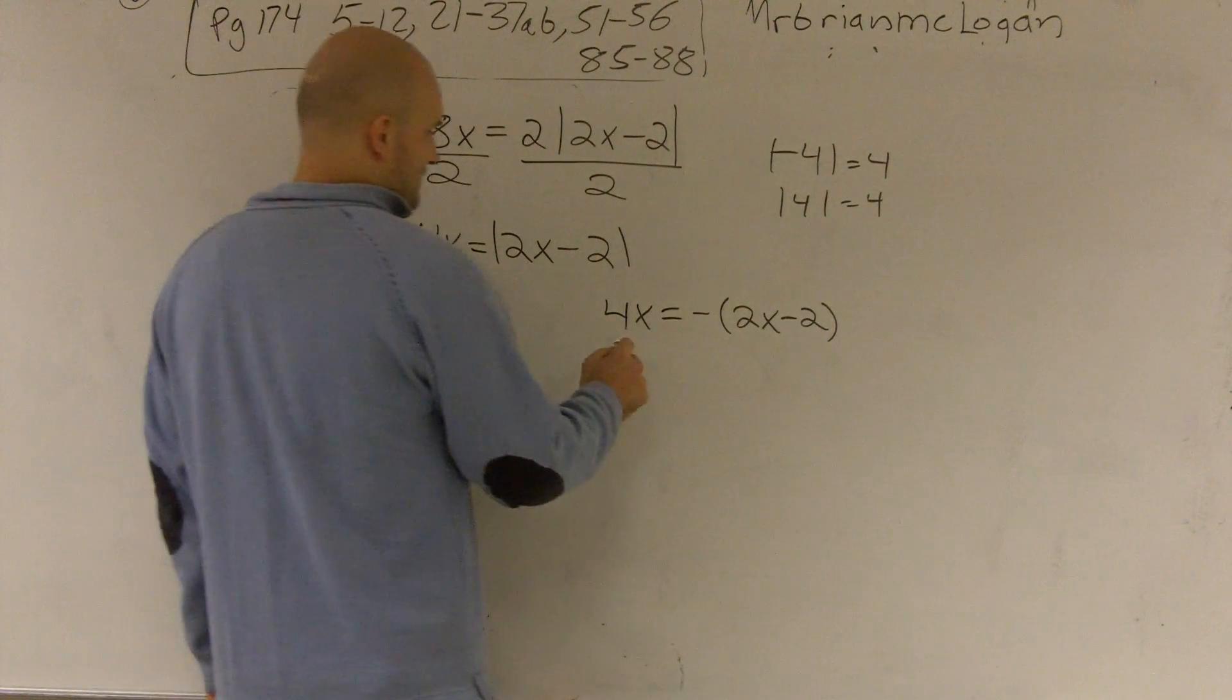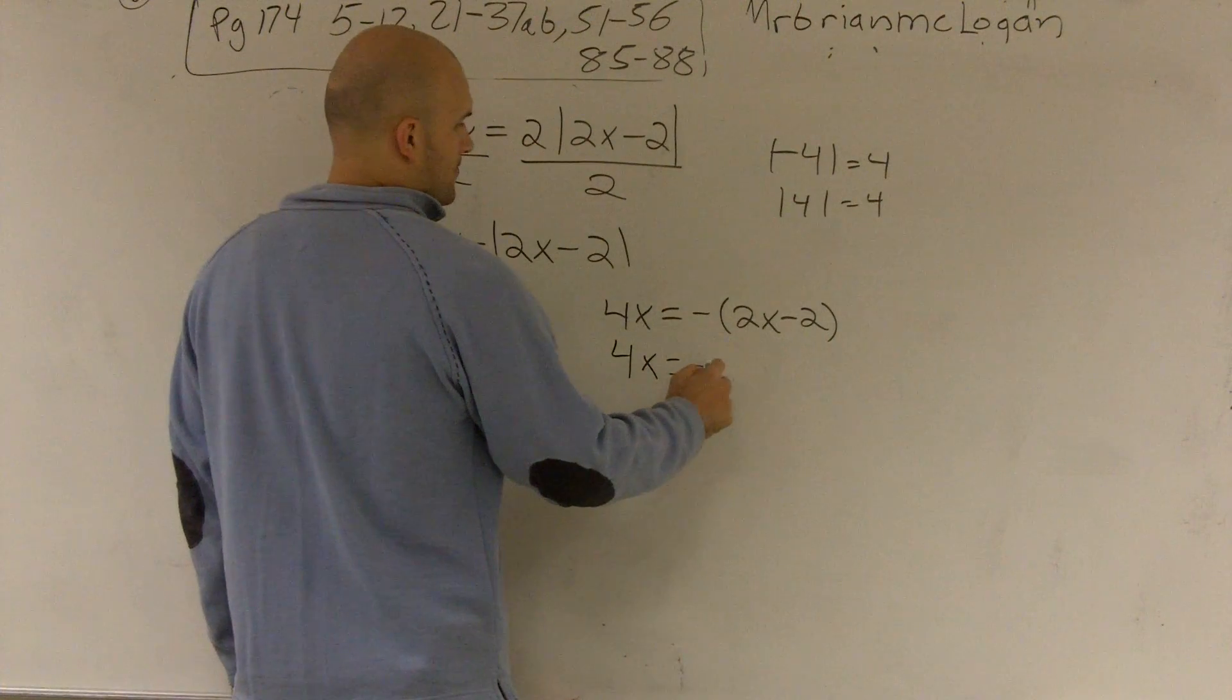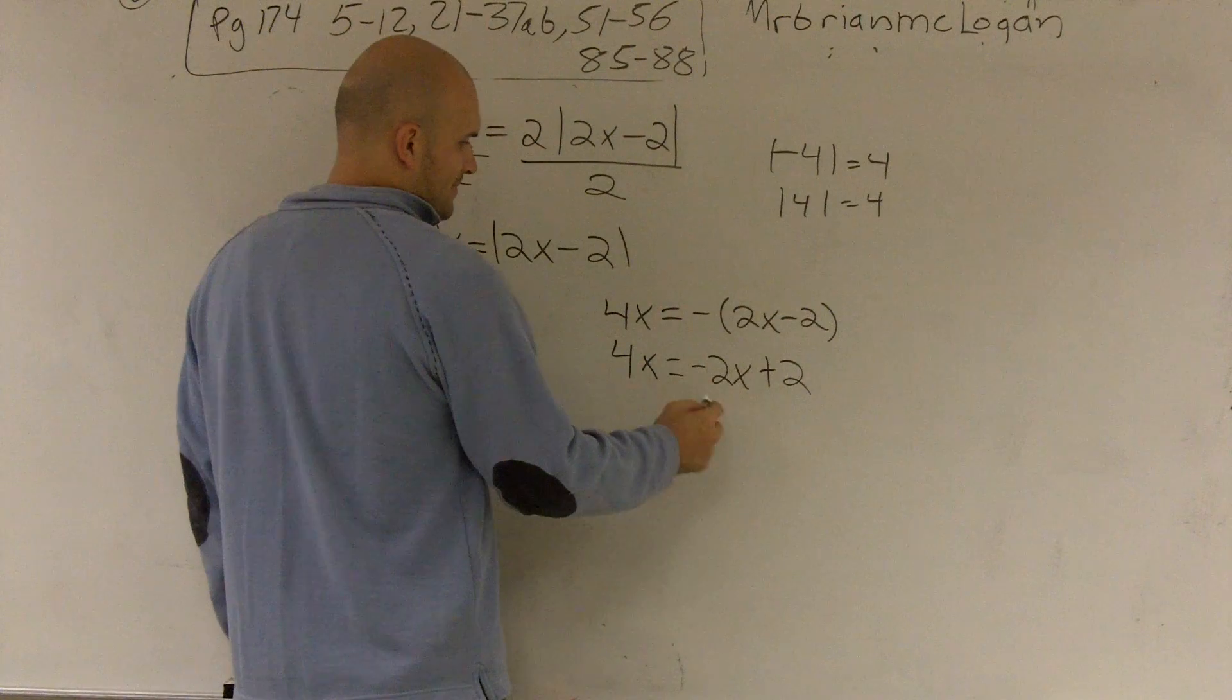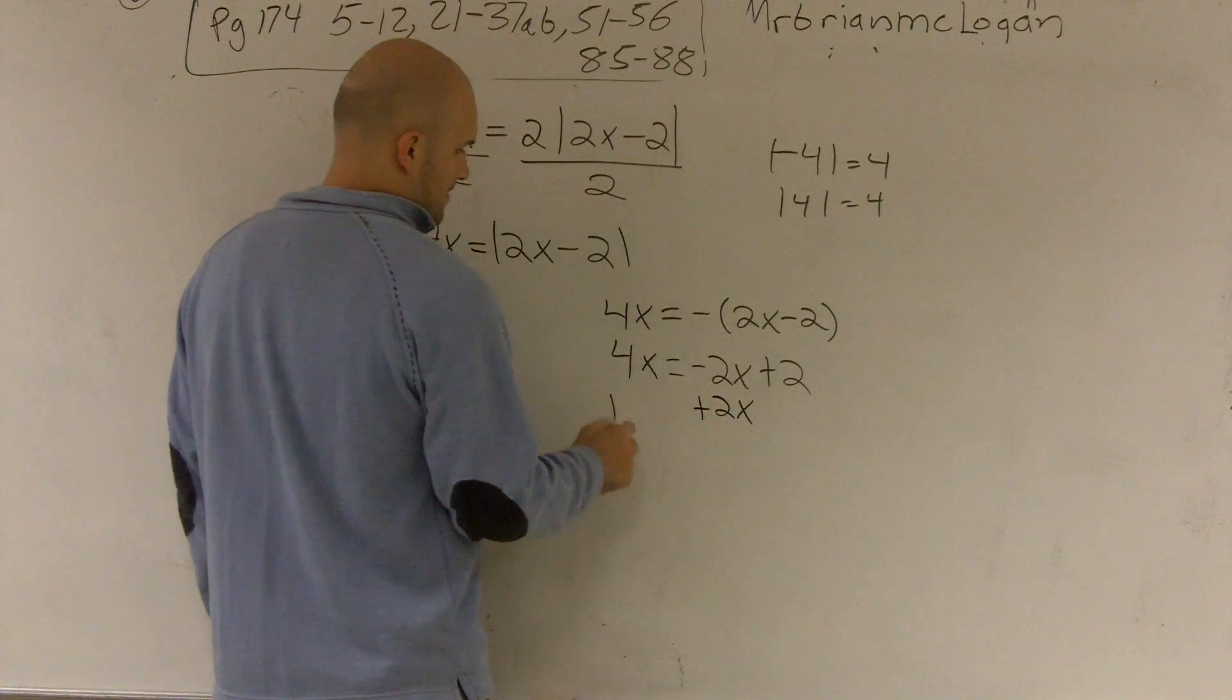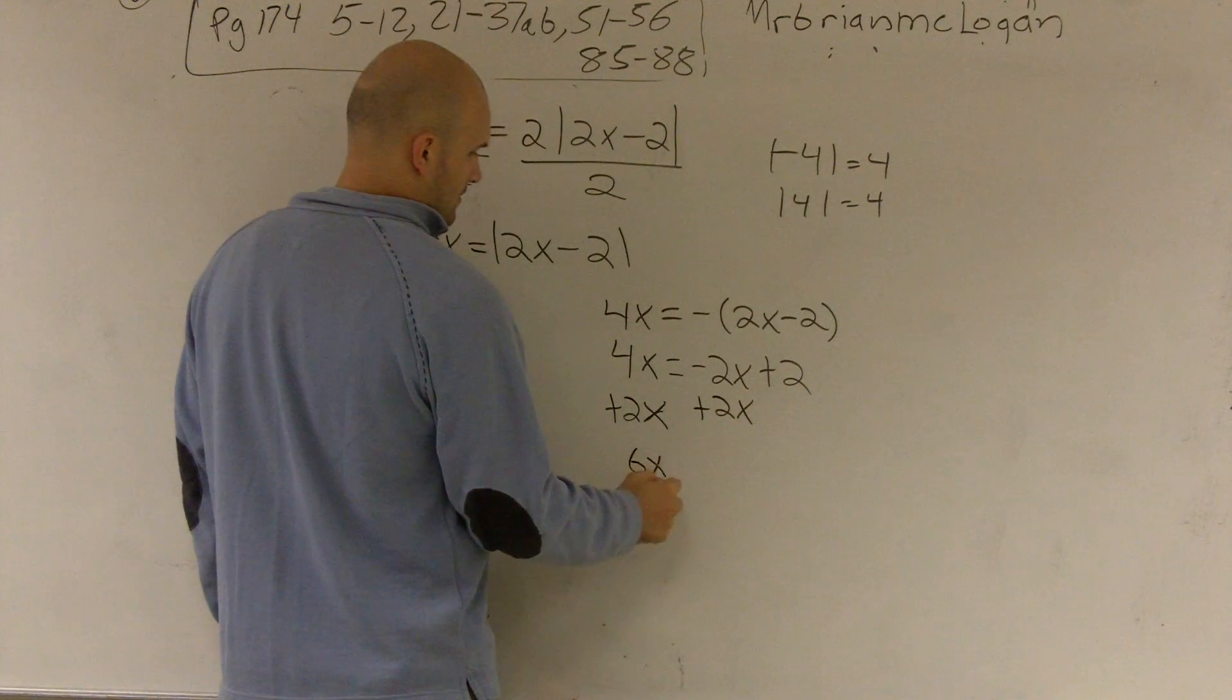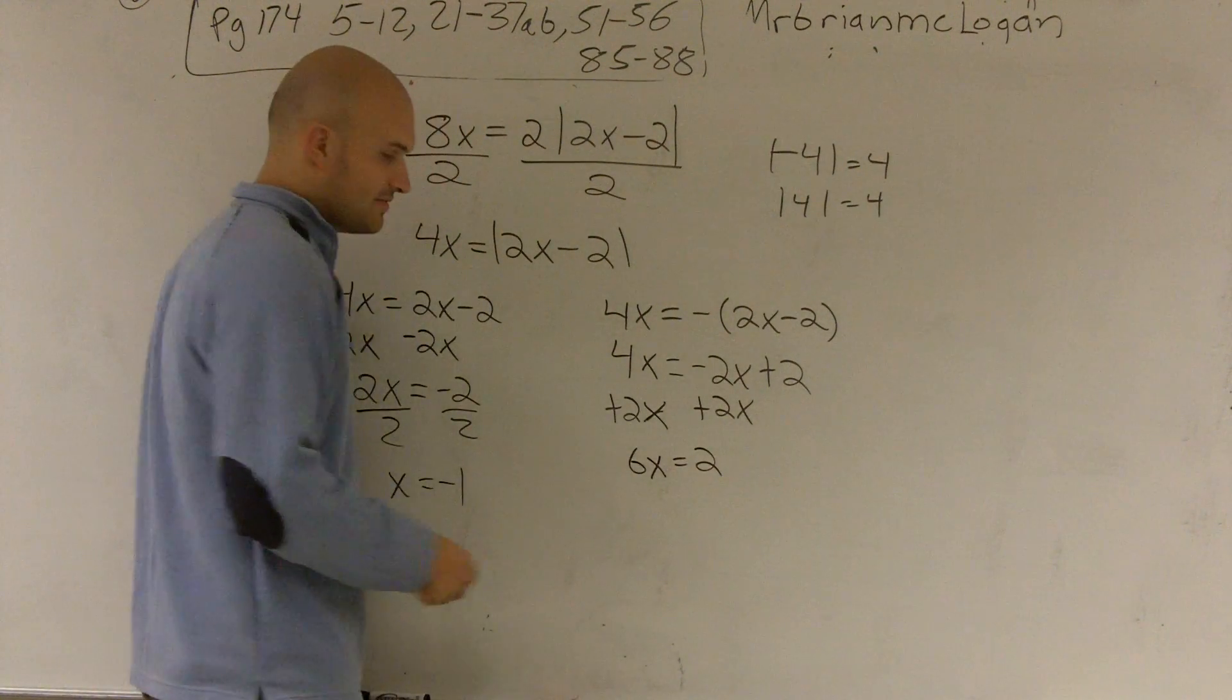And here, I'm going to have to distribute my negative. Once I've distributed my negative, now I get my x's on to the same side. Now I need to divide by 6.